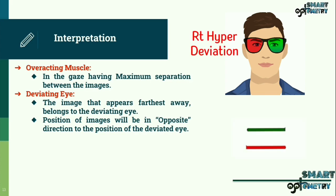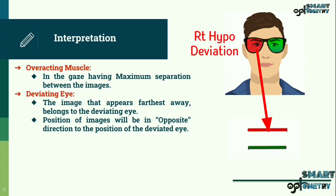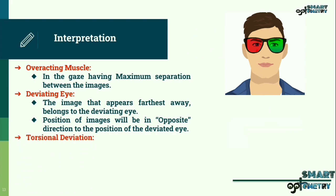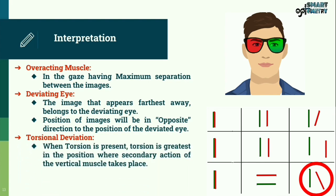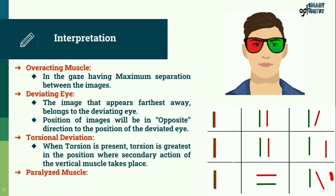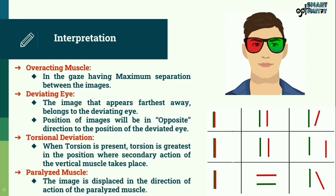In hyper deviation, the image is lower; in hypo deviation, the image is higher. When torsion is present, torsional deviation is greatest in the position where the secondary action of the vertical muscles takes place. For the paralyzed muscle, the image is displaced in the direction of action of the paralyzed muscle.